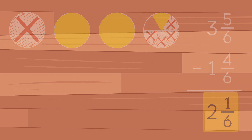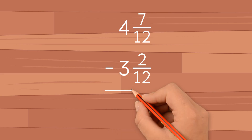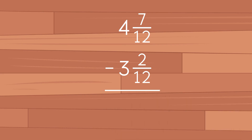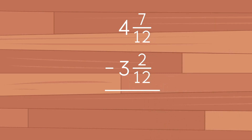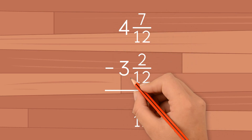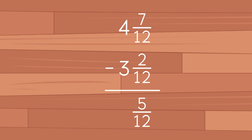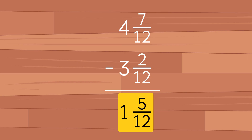Let's try another example: 4 and 7 twelfths minus 3 and 2 twelfths. First, we subtract the fractional parts: 7 over 12 minus 2 over 12 gives us 5 over 12. Now we subtract the whole number parts: 4 minus 3 gives us 1. So the final answer is 1 and 5 twelfths.